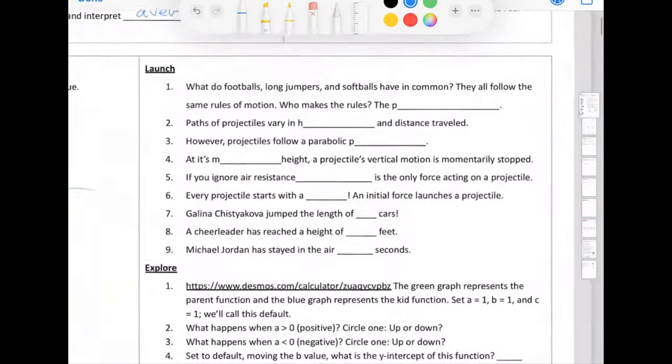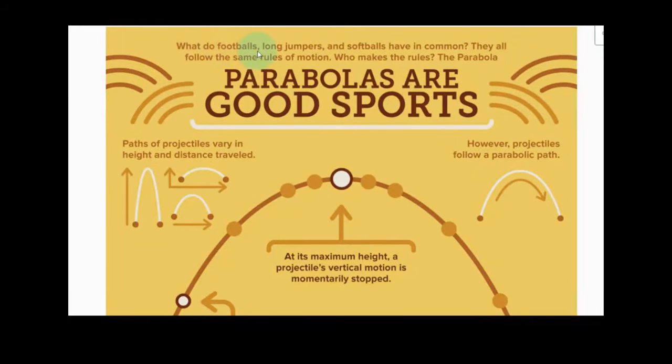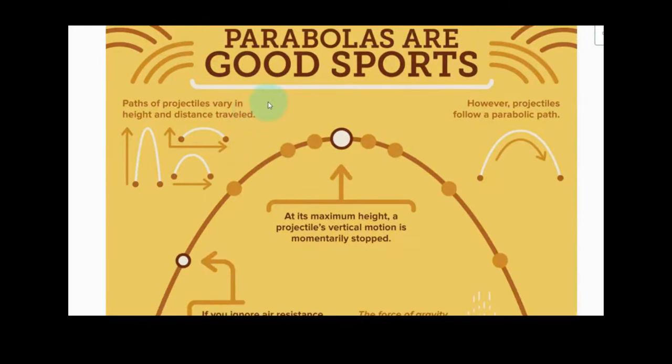All right. Let's go into our law. What do footballs, long jumpers, and softballs have in common? They all follow the same rules of motion, but who makes those rules? The parabola. The parabola is what goes in the blank. So parabolas are good sports. The paths of projectiles vary in height and distance traveled. So you can kick a football really high in the air, or maybe you want to go long, or kind of a perfect one.